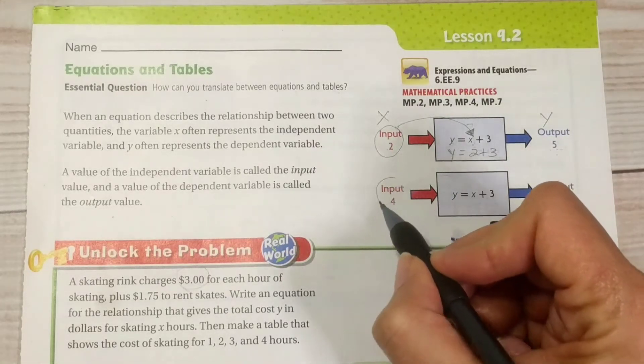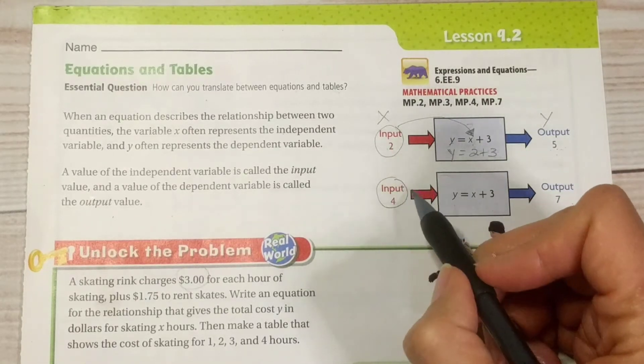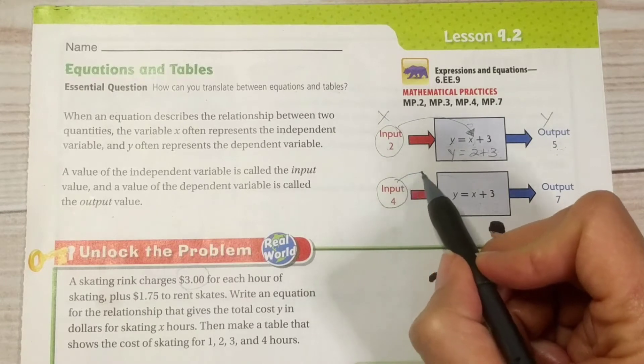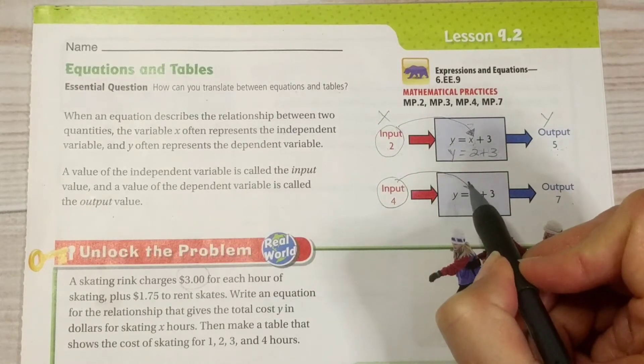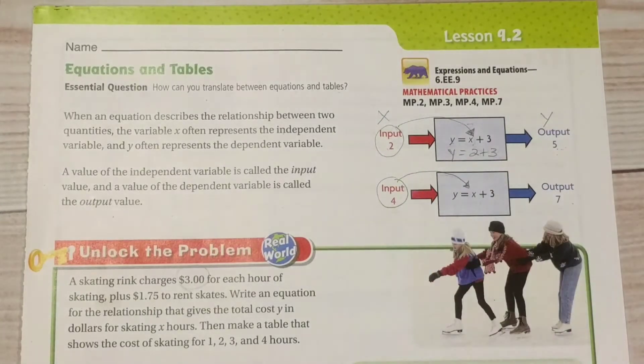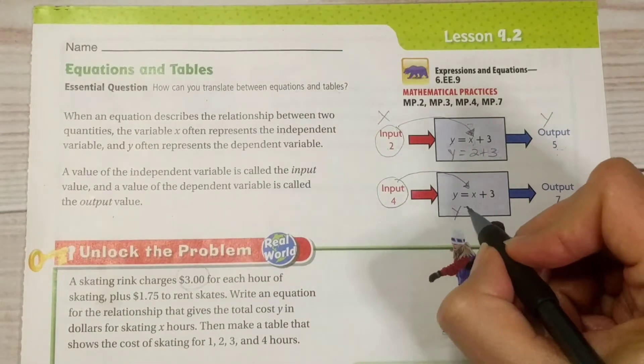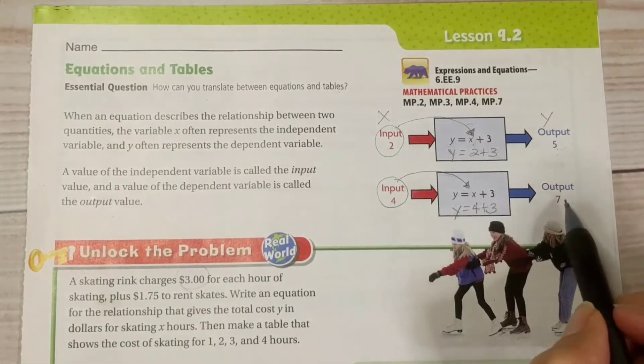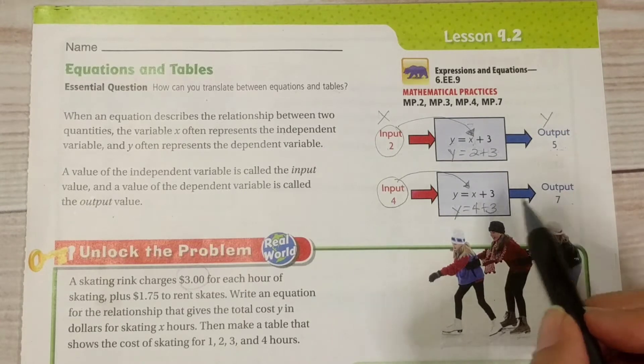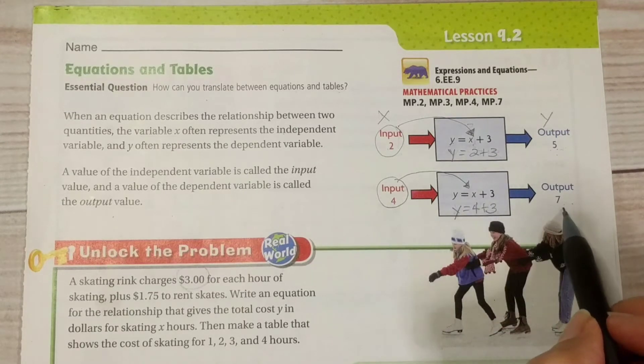Let's do that again. We take our input, which is our x value, put it in for x, substitute it in for x. y equals four plus three, so our output then is seven. y equals seven.